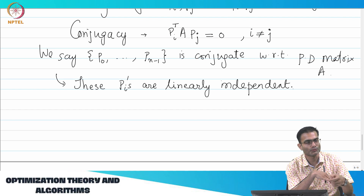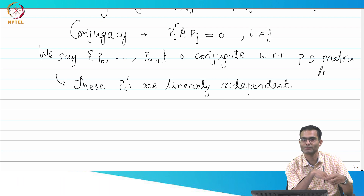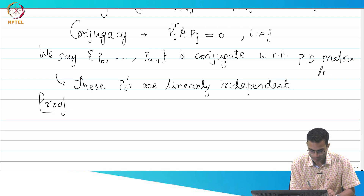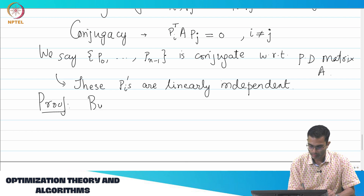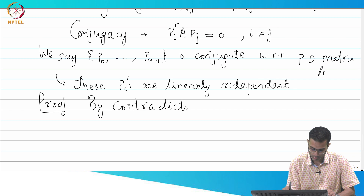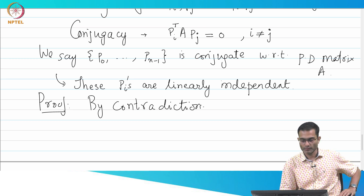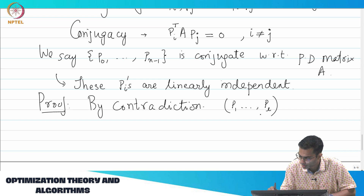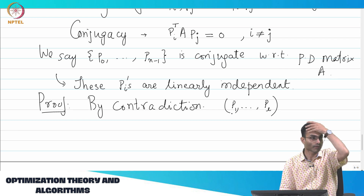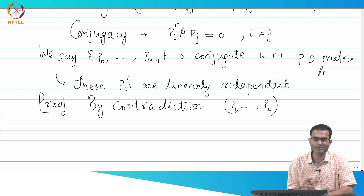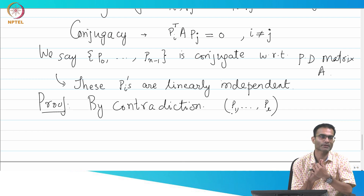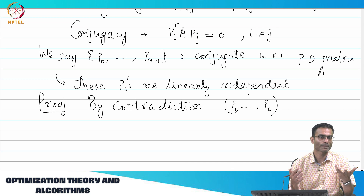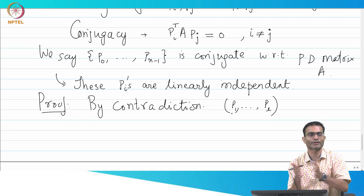When we were doing proofs, one of the first tricks in the bag is proof by contradiction. Let us see if our old friend helps us out here. I am going to take L such vectors. What does proof by contradiction mean here? The contradictory statement is: they are not linearly independent, meaning they are linearly dependent. That means I can express any one of the vectors as a linear combination of all the others.